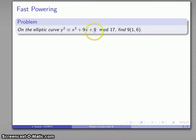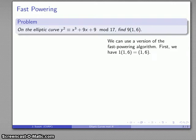So here I have an elliptic curve mod 17 and I want to find 9 times (1,6). In other words, I want to find the sum of (1,6) nine times. And I can use my fast powering algorithm in essentially the same way.